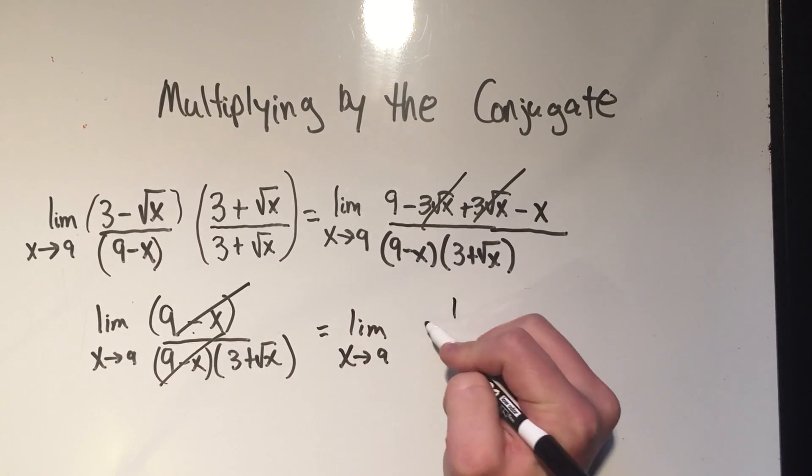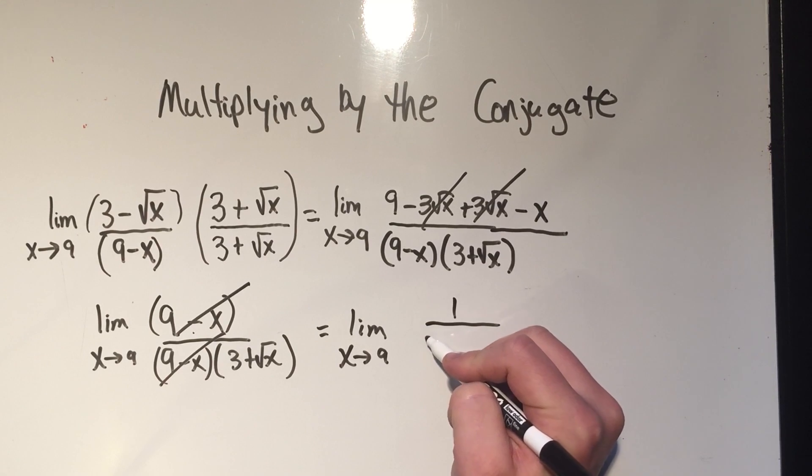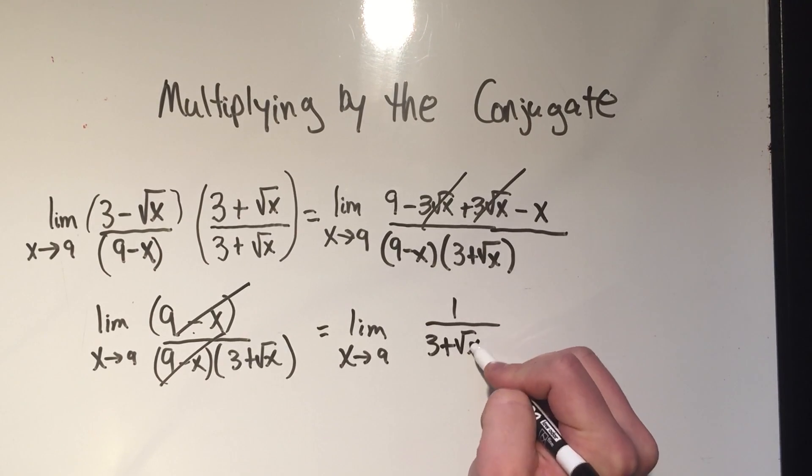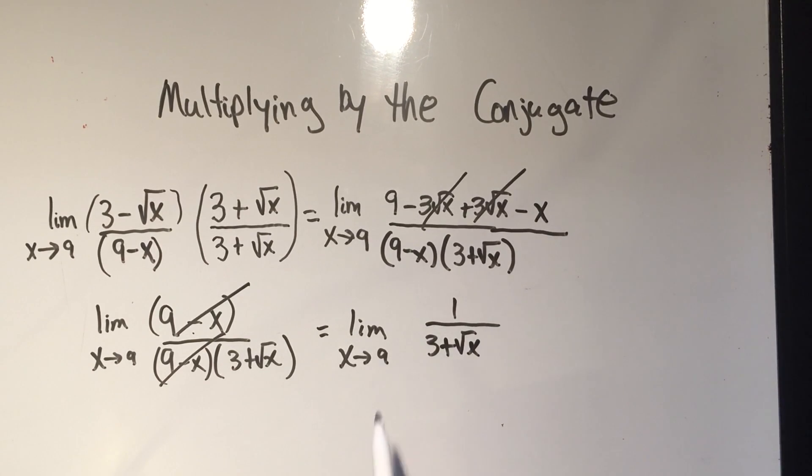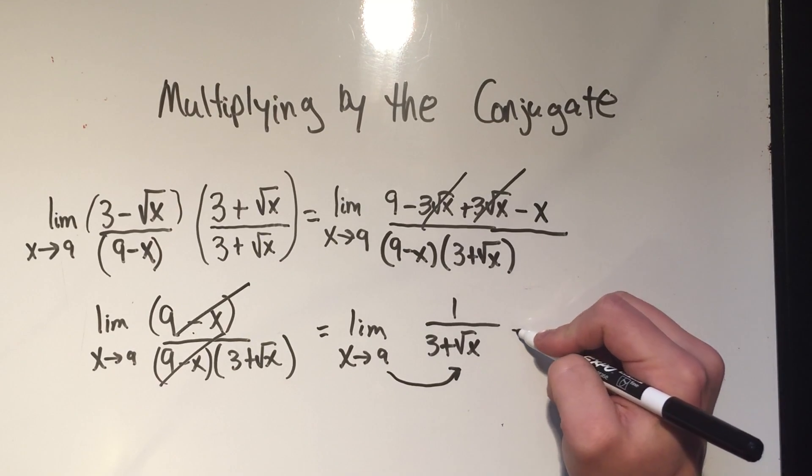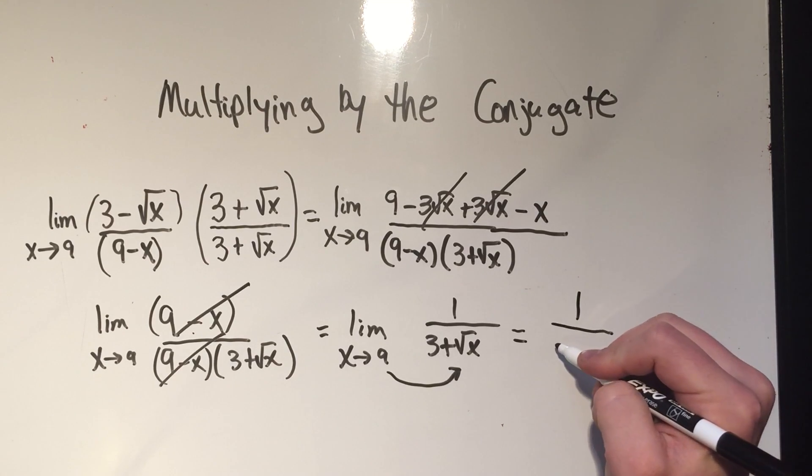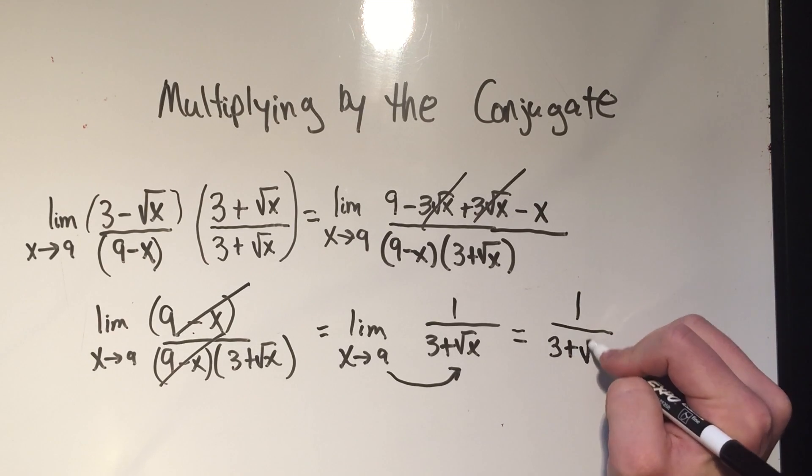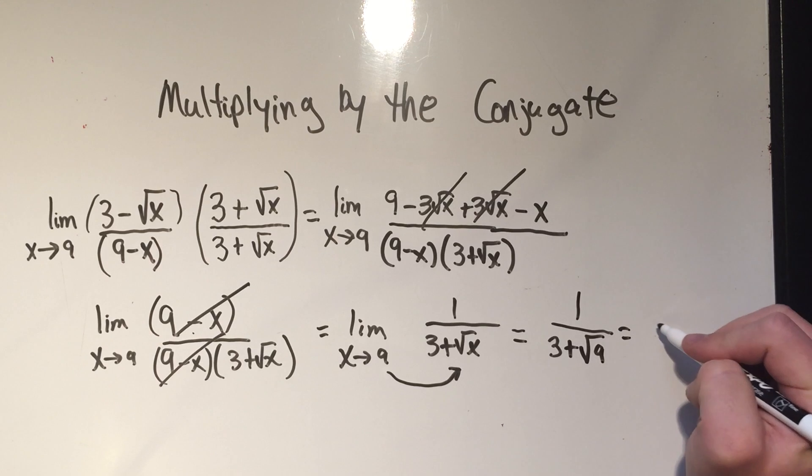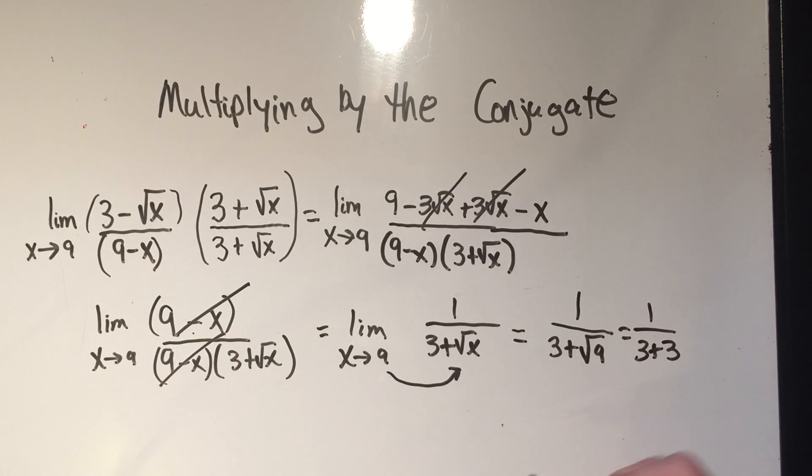And what happens, you'll see why I didn't distribute the denominator, because I can just cancel the 9 minus x's. When I cancel the thing in the denominator, this is what I'm left with. After I cancel, now I'm going to plug in my 9 for x. Now I no longer have to write limit. That will be 1 over 3 plus square root of 9, which is 3. So I've got 1 over 3 plus 3, or 1 sixth would be the answer.